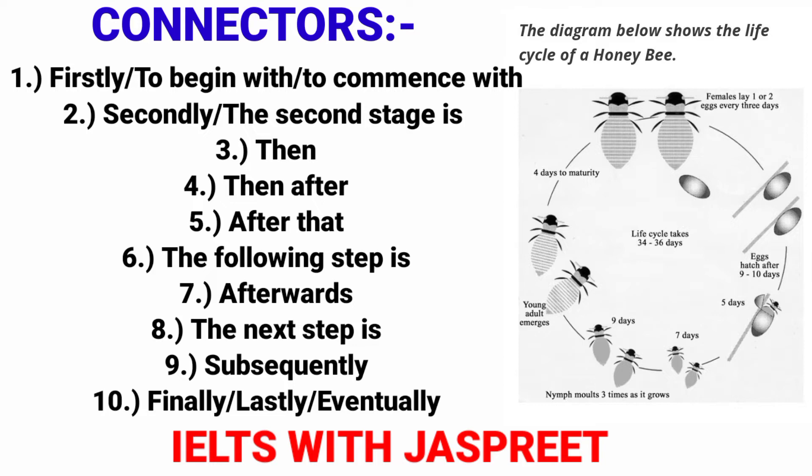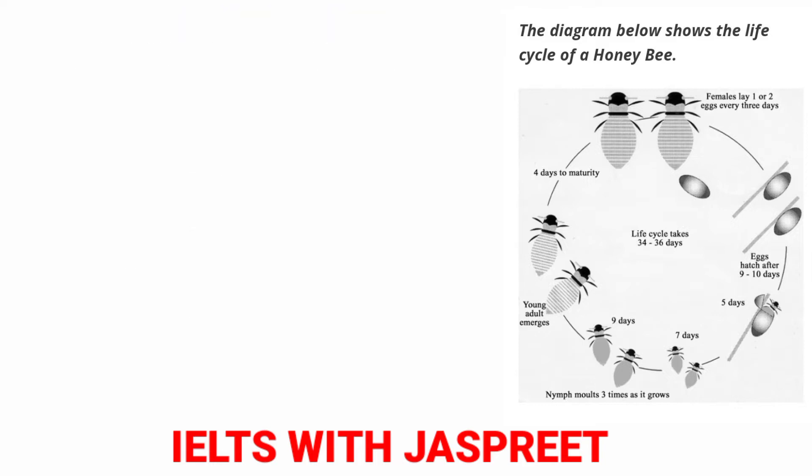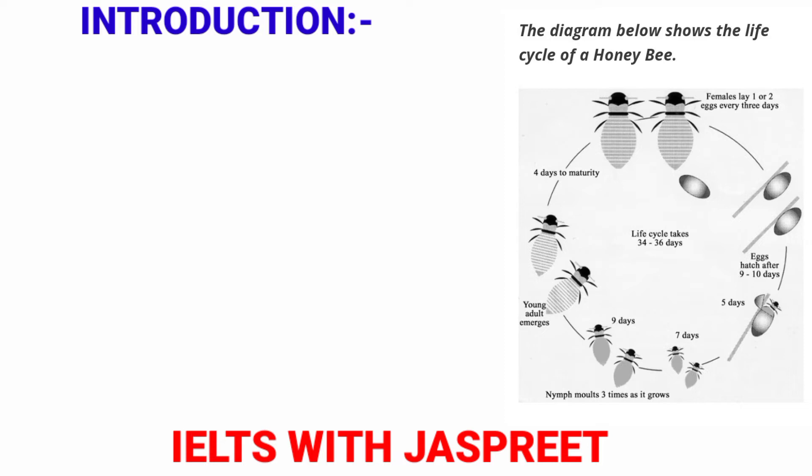For the last stage, use 'eventually' — that is much better than 'lastly' and 'finally,' but you can use those too. Now let's begin with the natural process chart. In this video we will discuss how to write about the life cycle of a lady bee, or honeybee. Look at the picture before we learn how to write a simple and effective introduction.